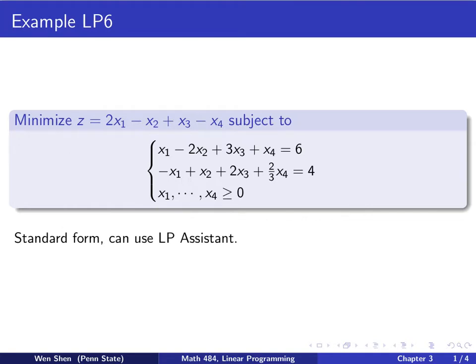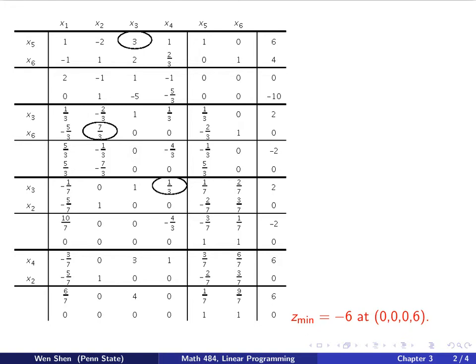We see this is not canonical form, but we can use LP assistant directly there and adding artificial variables. So let's put this into the LP assistant. And this is the tableau generated by the LP assistant.